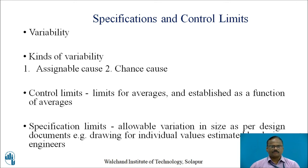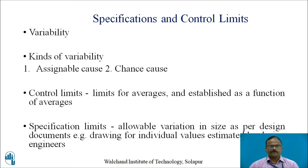One is an assignable cause and the second is a chance cause. Assignable cause is because of the man, material, machines and equipment — differences among these leads to an assignable cause. Chance cause is inherent to the process; it is inevitable. For example, a simple play between a nut and bolt can lead to different dimensions.